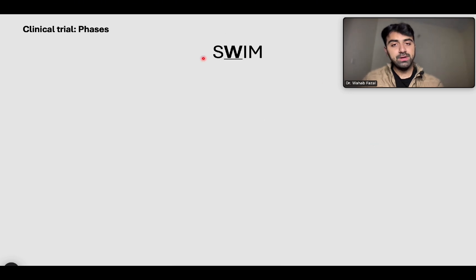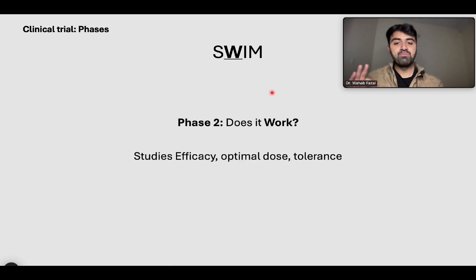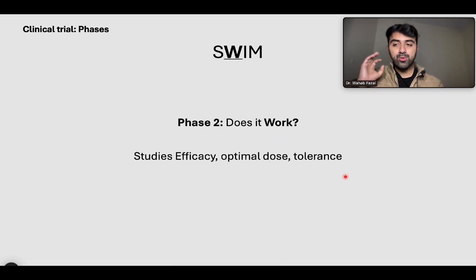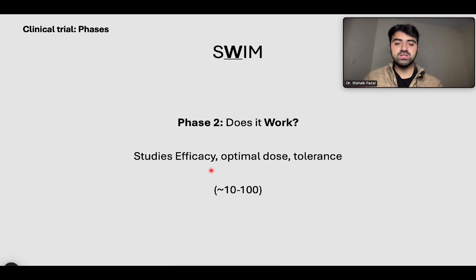Phase two, W — does it work? This phase studies the efficacy, the optimal dose, and the tolerance. You want to see at what dose it works, does it work at all, and how do people tolerate it. That's around 10 to 100 people — slightly larger than phase one.